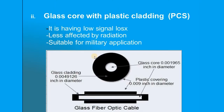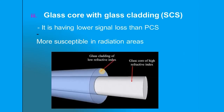The second type is glass core with plastic cladding, abbreviated as PCS. The signal loss is very less, and it is less affected by external electromagnetic radiations. It is generally used for military applications. You can see the fiber here — the glass core is about 0.001965 inches in diameter, surrounded by plastic cladding.